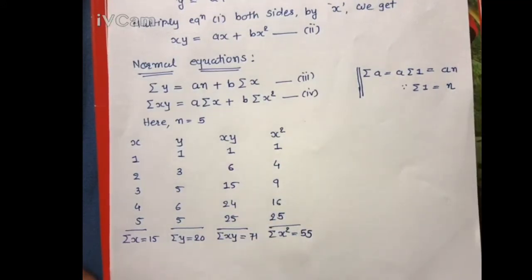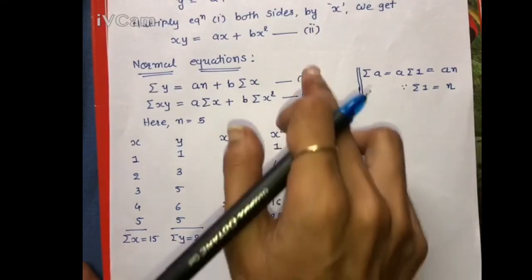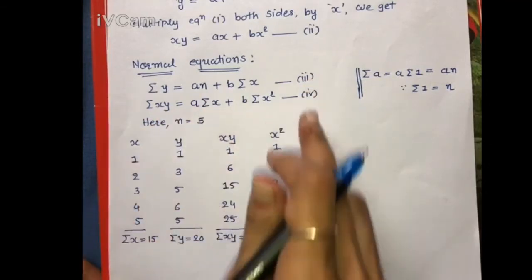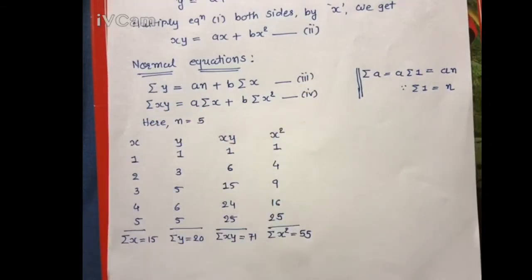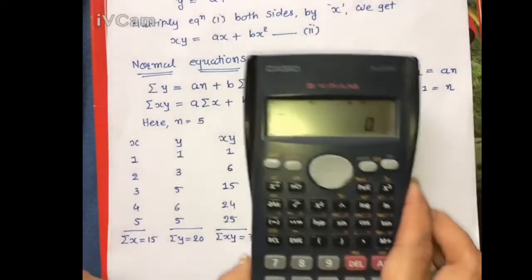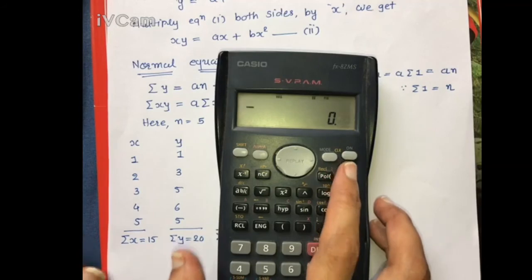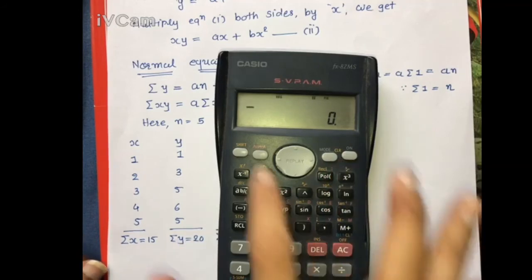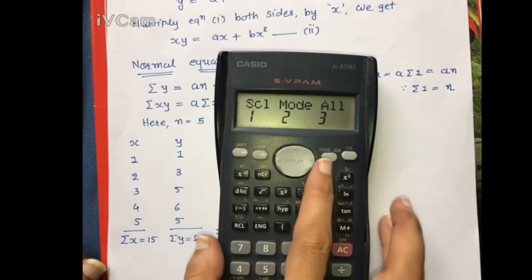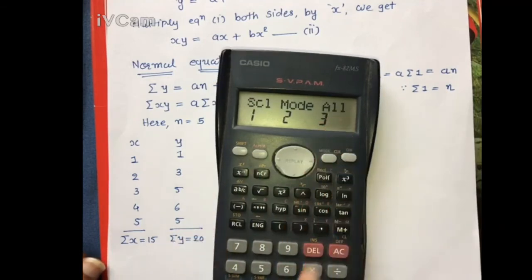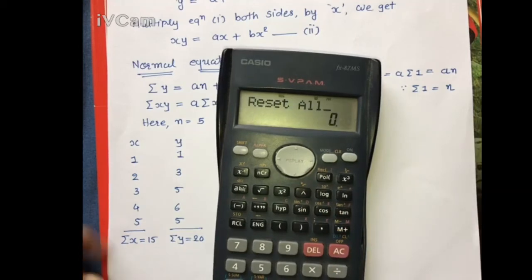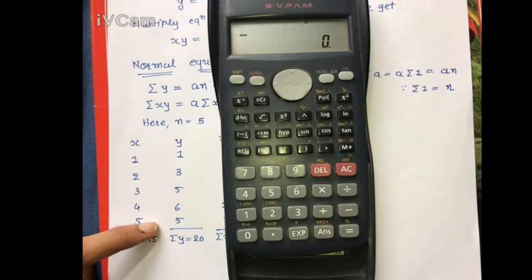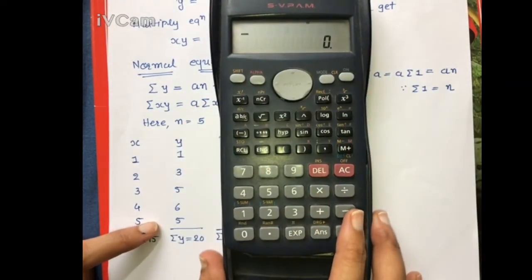Now we have all the required values for equations 3 and 4. If you wish to use a scientific calculator instead of making this table, first reset your calculator using Shift → Mode → 3 (for All) → equals. Then your calculator is reset and you can do your calculations.